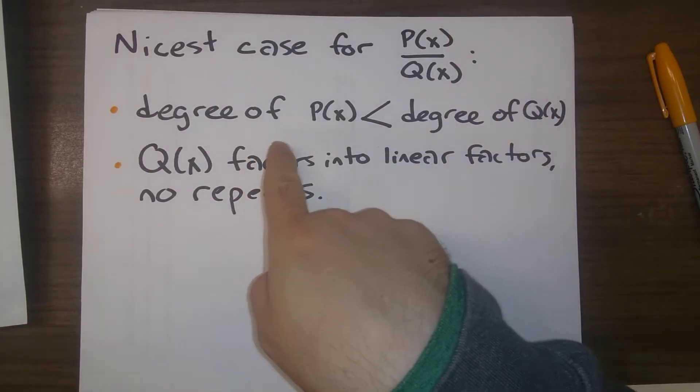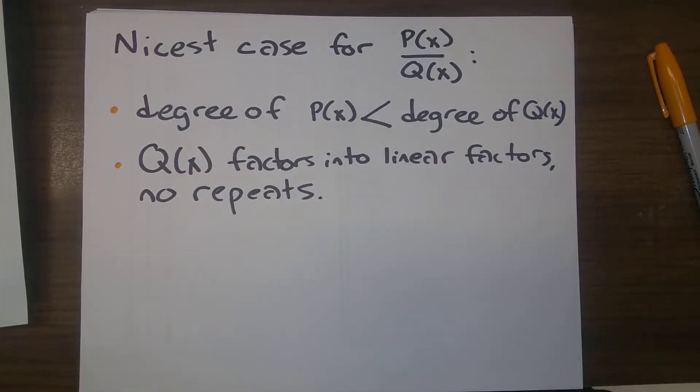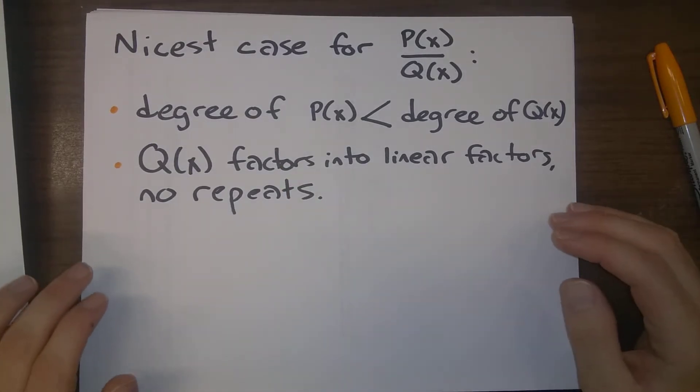Here's the two things that will make this nice. The first is that the degree of the numerator is strictly less than the degree of the denominator. And the second is that the denominator is going to factor into linear factors with no repeats.